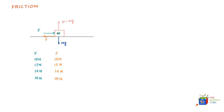This maximum force is the static force of friction, written as f_max, which equals the static coefficient of friction μs multiplied by the normal reaction N.